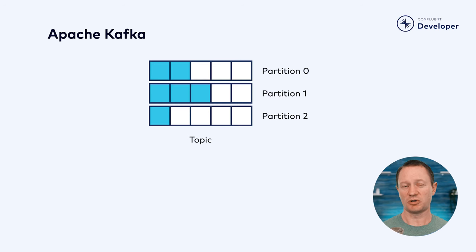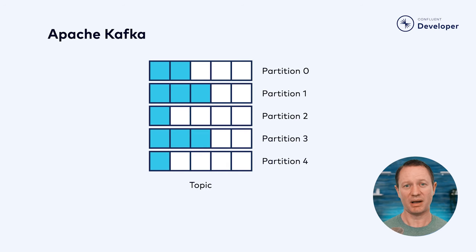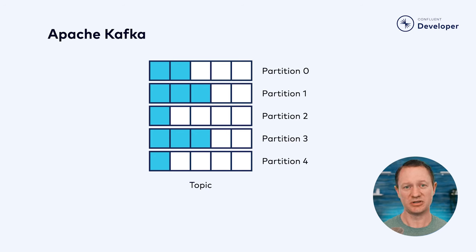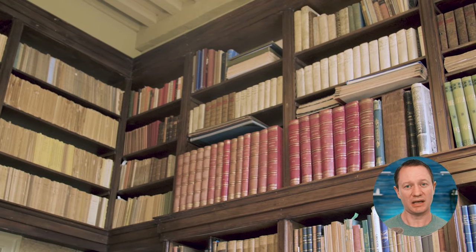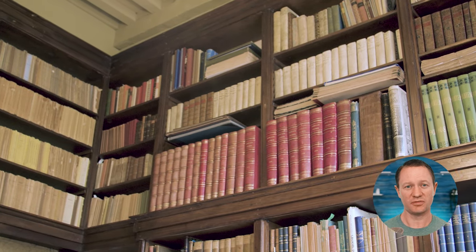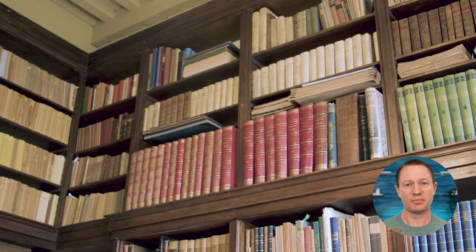Each topic is spread across multiple partitions. These partitions help Kafka scale by allowing you to add resources and additional partitions as your system handles more and more data. Each partition is an ordered, immutable sequence of messages that is continually appended to. Think of a Kafka topic as a library and each partition as a different bookshelf in that library. Just as different bookshelves contain different books, each partition in a topic holds a subset of the overall data, making each book an individual message sent to Kafka.